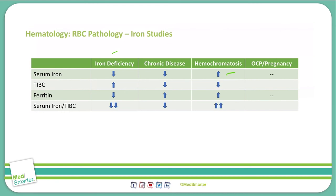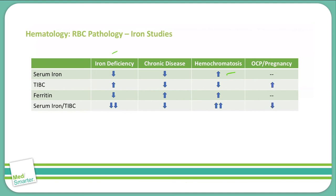For pregnancy or oral contraceptive use, the oral contraceptive pill often mimics a pregnancy in the body — that is what decreases the release of eggs during the monthly cycle. There's no change in the serum iron and no change in the ferritin; there's no difference in the storage or the amount in the blood. But there will be an increase in the total iron binding capacity and a decrease in the serum iron to total iron binding capacity ratio.